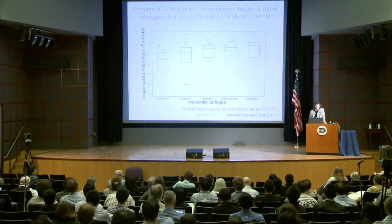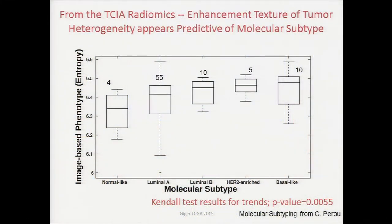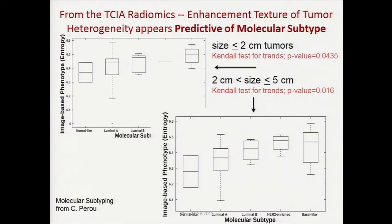We also compare this to the molecular subtype. The enhancement texture of tumor heterogeneity appears to be predictive of molecular subtype. At the bottom we show normal-like, luminal A, luminal B, HER2-enriched, and basal-like breast cancers — as you go across the graph, the prognosis is worse. This was a statistical trend. In our analyses, we realize that tumor size is very important, so we try to control for that, and we still see enhancement texture heterogeneity being predictive of molecular subtype — as shown here, where the plot on the left is for very small tumors and the one on the right is 2 to 5 centimeters.